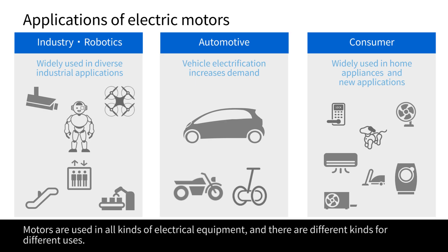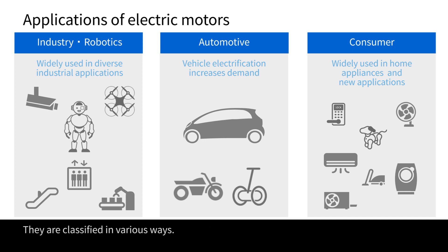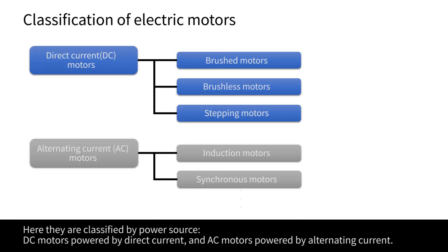Motors are used in all kinds of electrical equipment, and there are different kinds for different uses. They are classified in various ways. Here, they are classified by power source: DC motors powered by direct current, and AC motors powered by alternating current.